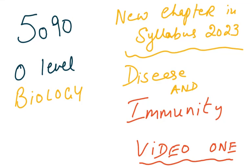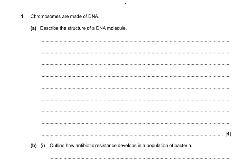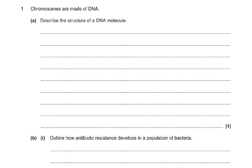Bismillahirrahmanirrahim. I have decided to collect some questions from other syllabuses like the 0610 IGCSE and bring out the questions for disease and immunity, which is a new chapter in the 5090 2023 syllabus. I hope this is going to be helpful because we are going to see some questions on the new syllabus in the upcoming exams. Some questions might have material from another chapter, but this is just to help you revise all the major topics of great importance which may come in the upcoming exams.